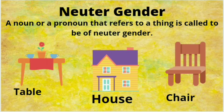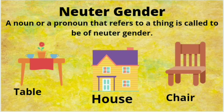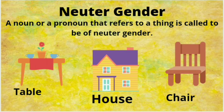One very important point about neuter gender: collective nouns are considered to be of neuter gender. Recall what collective nouns are — crew, flock, class, army. They all denote collective nouns of living beings. For example, class is a collection of students, and army is a collection of soldiers — both are living beings. But collective nouns are considered to be of neuter gender. Remember: collective nouns are referenced as neuter gender.